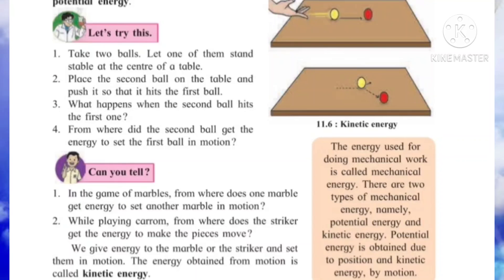The energy used for doing mechanical work is called mechanical energy. There are two types of mechanical energy: potential energy and kinetic energy. Potential energy is obtained due to the position of an object, and kinetic energy is due to motion. So mechanical energy is the first form of energy, divided into two types — potential energy and kinetic energy. We will see the next part in the next video.